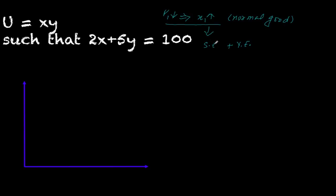As a consumer, he doesn't know he is experiencing these two effects; it's as an economist that you want to figure that out. What is income effect? Income effect is the change in consumption that you have because of a change in purchasing power — it doesn't have to be nominal income, it can be real income as well. So given that your prices are constant, if you have a change in purchasing power and you change the consumption of either or both goods, that's income effect.